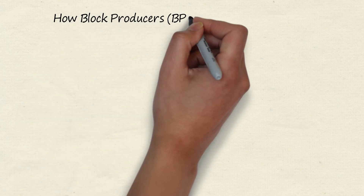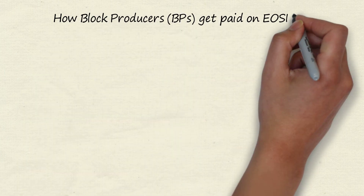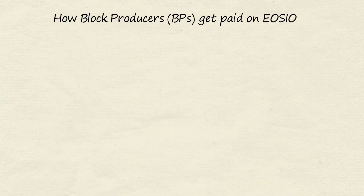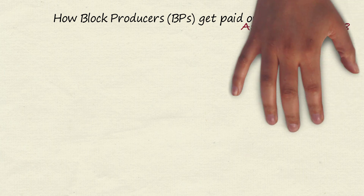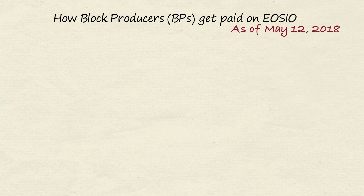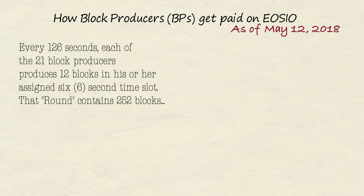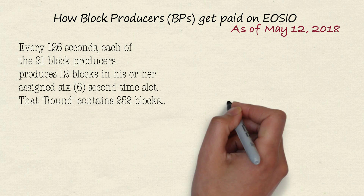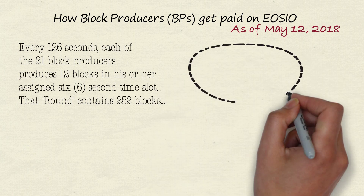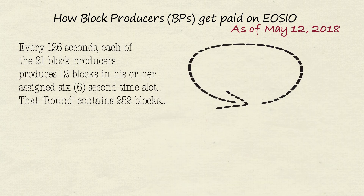Welcome to this overview of how block producers get paid on the EOSIO software system. This information is accurate as of May 12, 2018. Every 126 seconds, each of the 21 block producers produces 12 blocks in their assigned time slot. A round is 252 blocks.